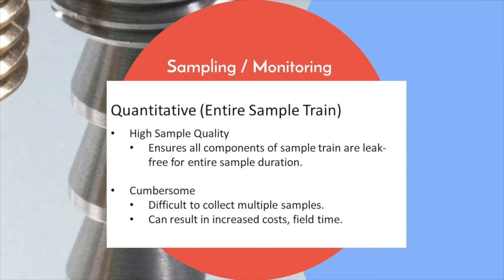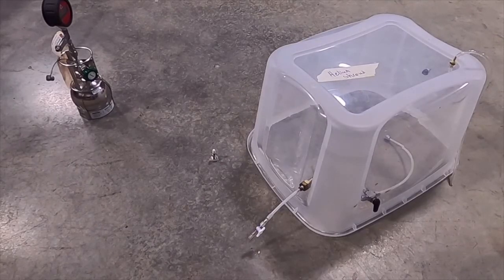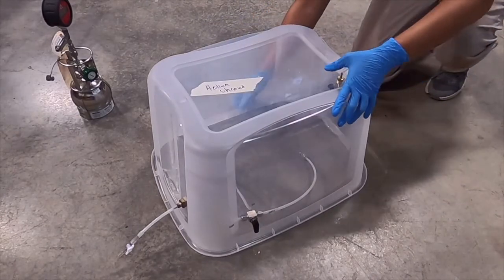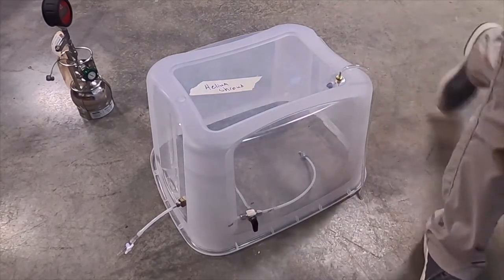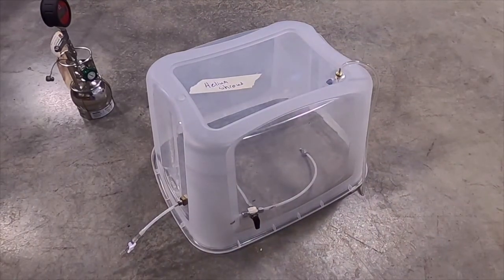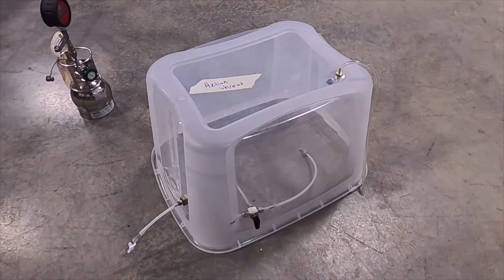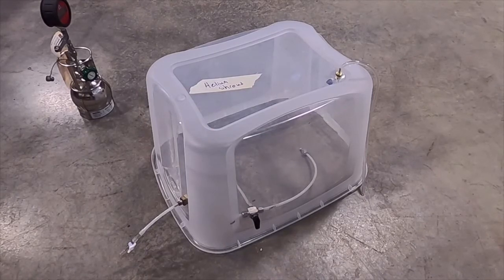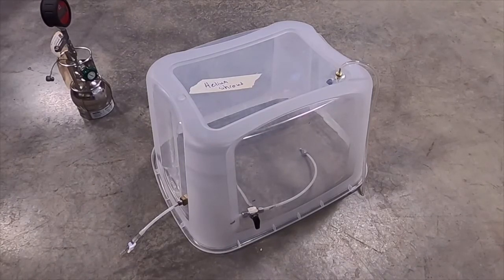Quantitative helium leak testing of the entire sample train. This method ensures very high data quality by fully enclosing the sample point and sample train. Due to this method's complexity, however, it can be difficult to collect multiple samples and may increase costs. This shroud is slightly different than the previous shroud. It features the same port configuration, but also a three-way valve with connections to the purge port, sample point, and the sample itself. The sample manifold and configuration used in this demonstration may vary from others that are available, so be sure to check with your equipment provider about the proper usage of the shroud.